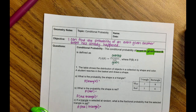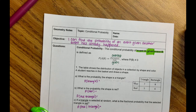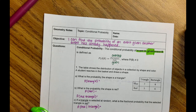We're going to do some basic probabilities and then we're going to do some given probabilities, and I'll show you the difference between them.